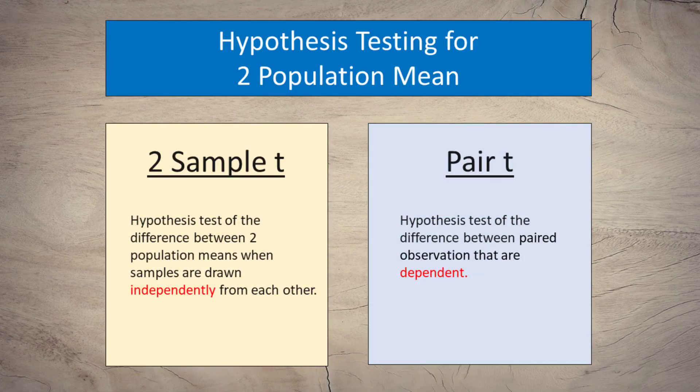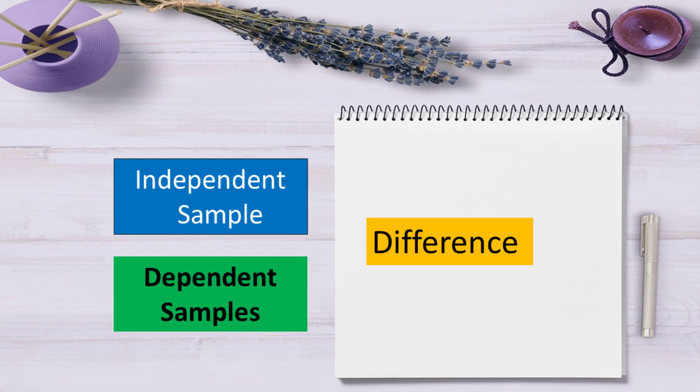2-sample t is the hypothesis test of the difference between two population means when samples are drawn independently from each other. Pair t-test is the hypothesis test of the difference between paired observations that are dependent. When you conduct a hypothesis test using two random samples, you must choose the type of test based on whether the samples are dependent or independent. What is the difference between independent and dependent samples?